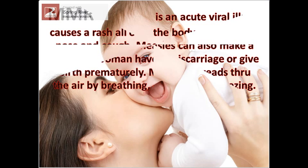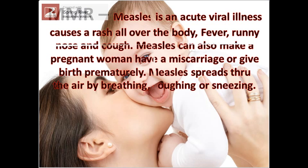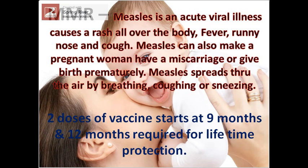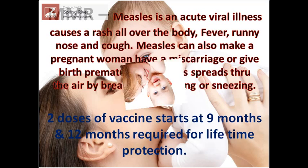MMR: Measles is an acute viral illness that causes a rash all over the body, fever, runny nose, and cough. Measles can also cause a pregnant woman to have a miscarriage or give birth prematurely. It spreads through the air by breathing, coughing, or sneezing. 2 doses of vaccine starting at 9 months and 12 months, required for lifetime protection.